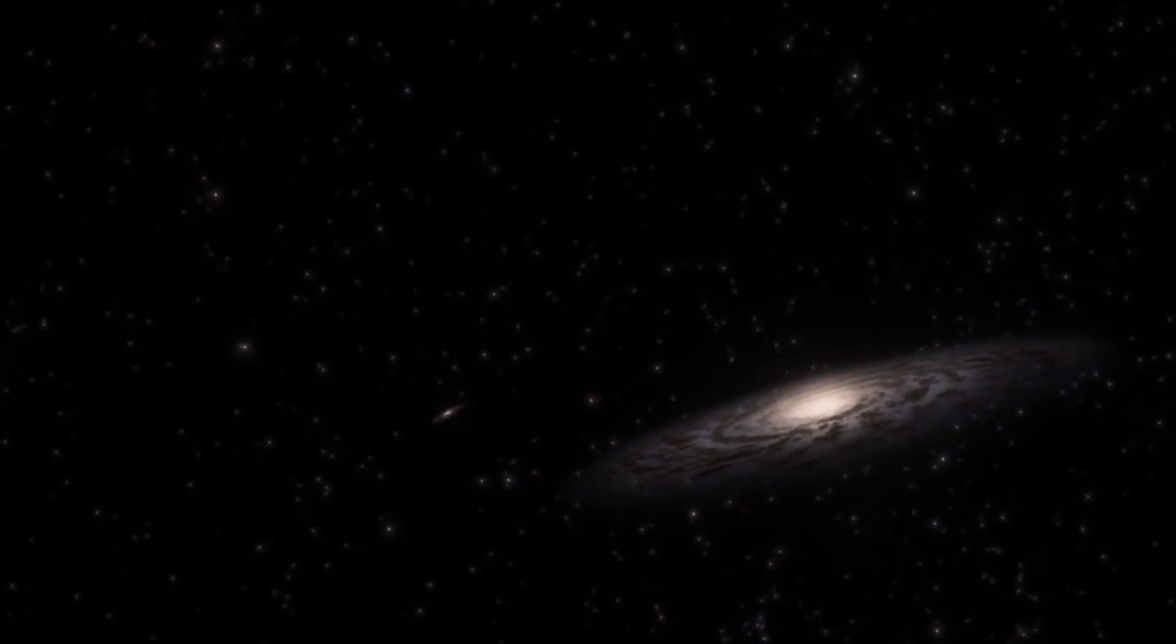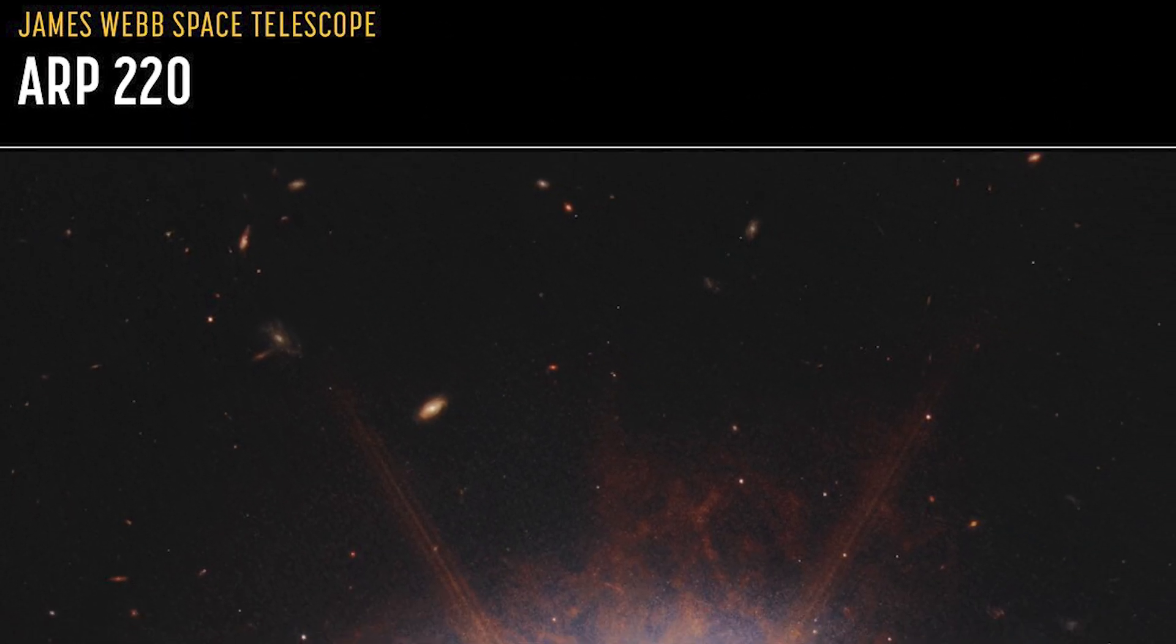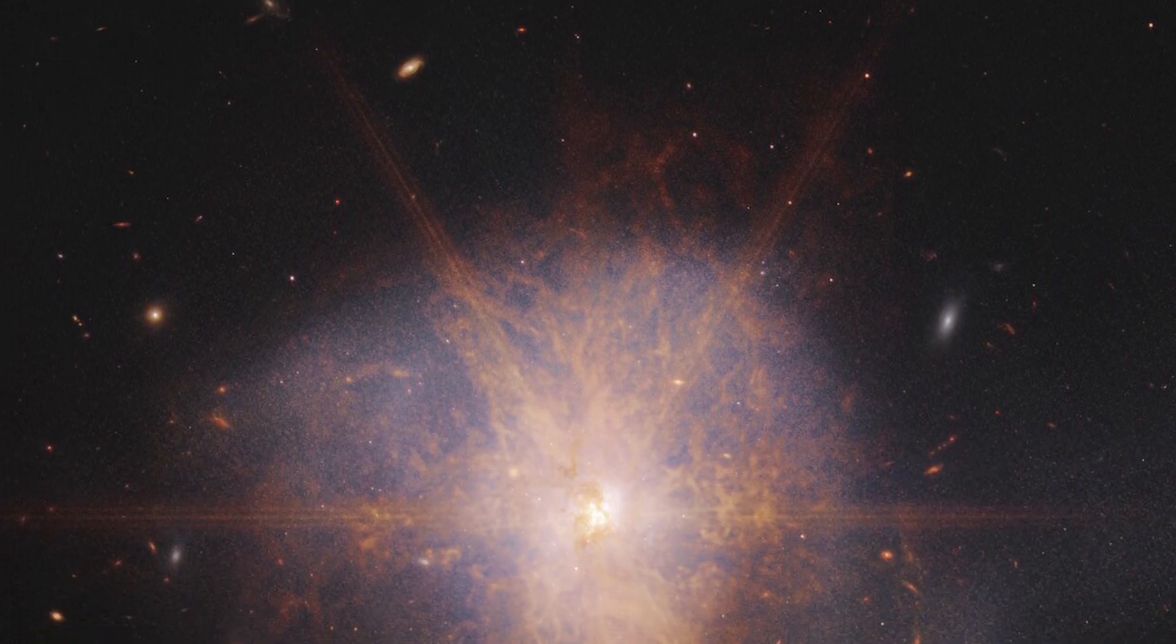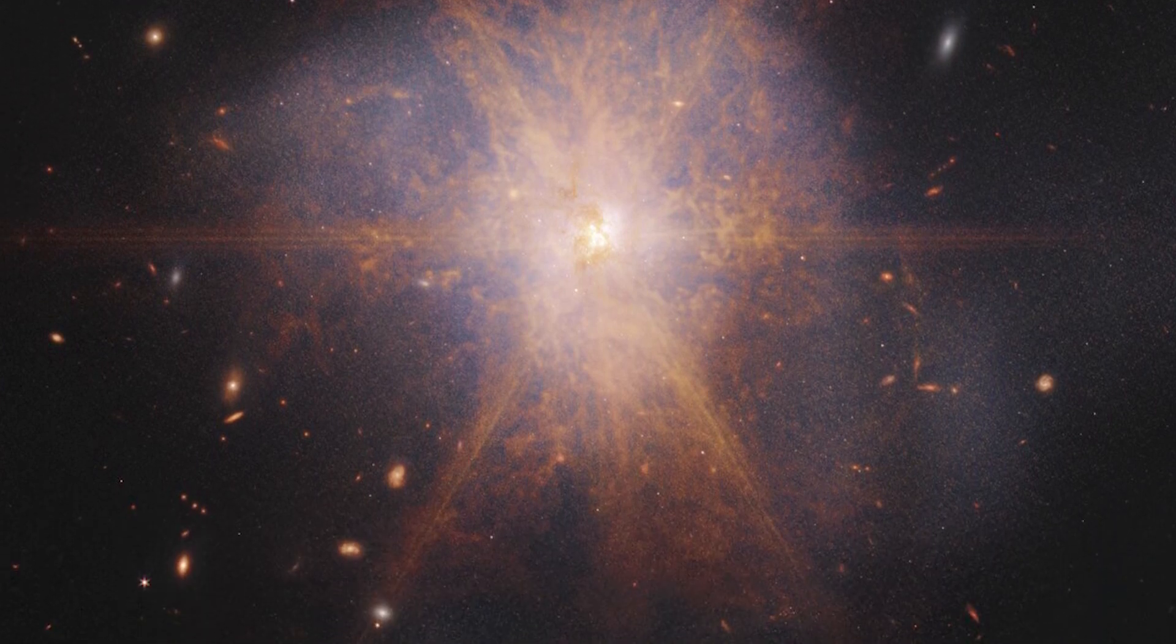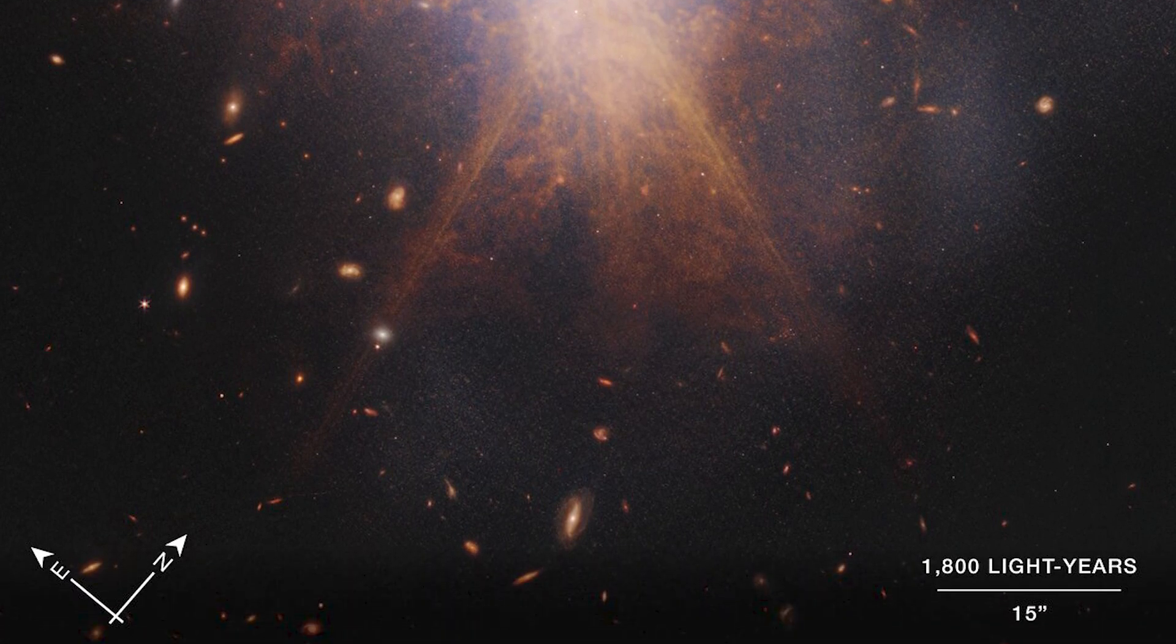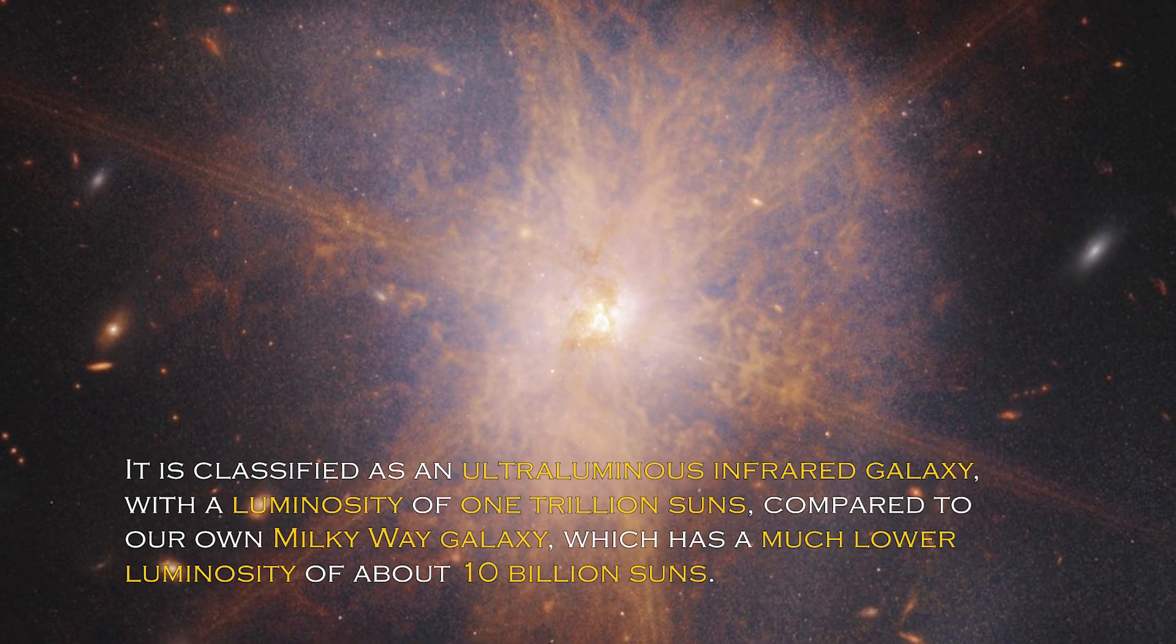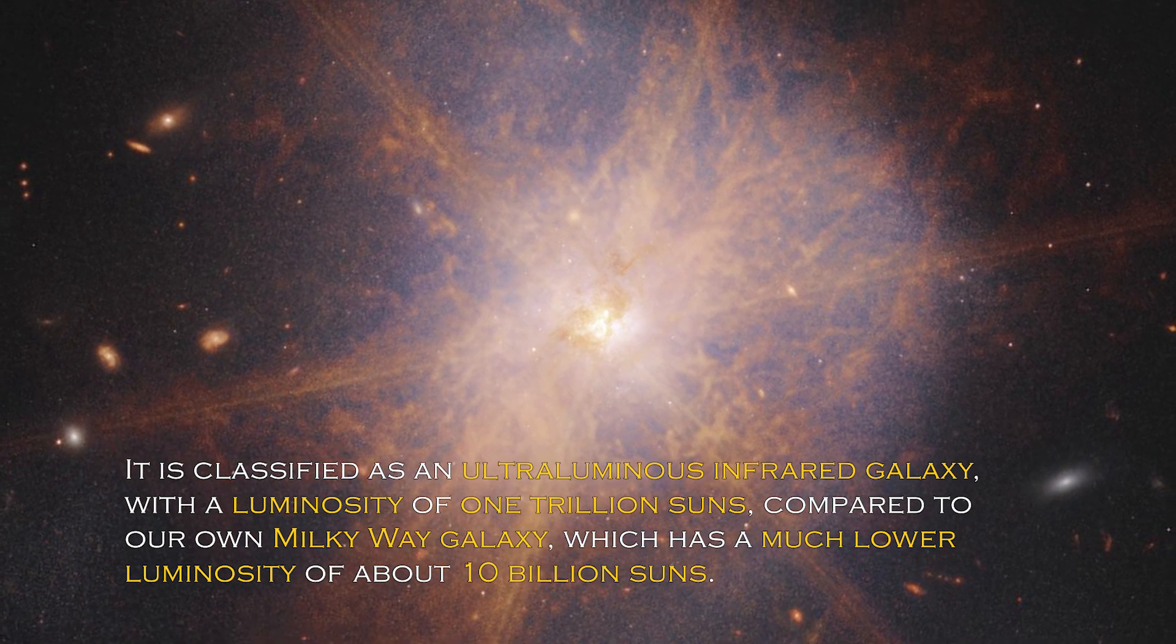NASA has made an exciting announcement about the galactic merger ARP 220, which was captured by the James Webb Space Telescope. This impressive galactic merger can be seen shining among other galaxies in the night sky. When two spiral galaxies merge, the phenomenon known as ARP 220 shines brightest in the infrared, making it perfect for observation by the James Webb Space Telescope. It is classified as an ultra-luminous infrared galaxy, with a luminosity of one trillion suns compared to our own galaxy, the Milky Way, which has much lower luminosity of about 10 billion suns.